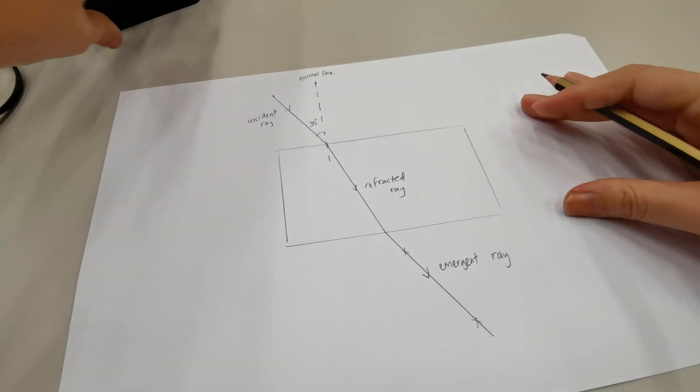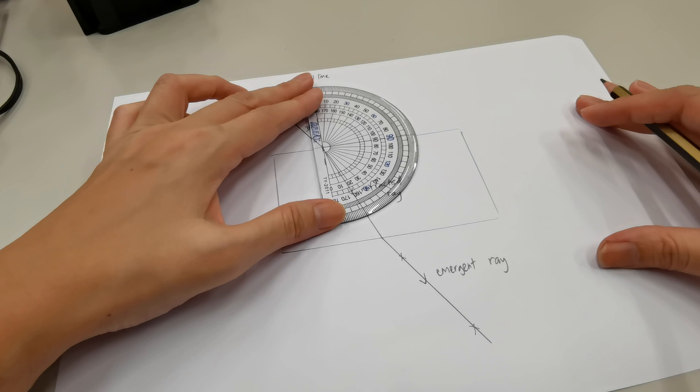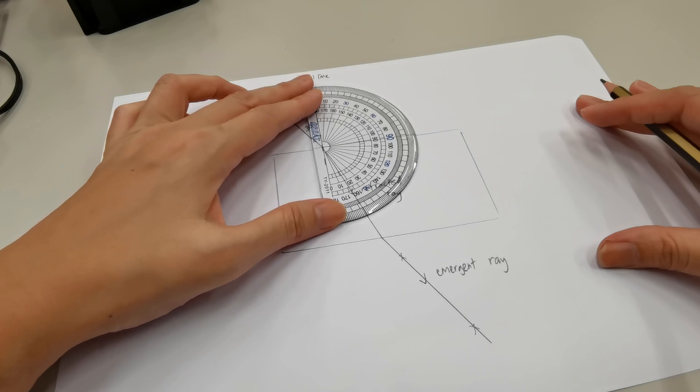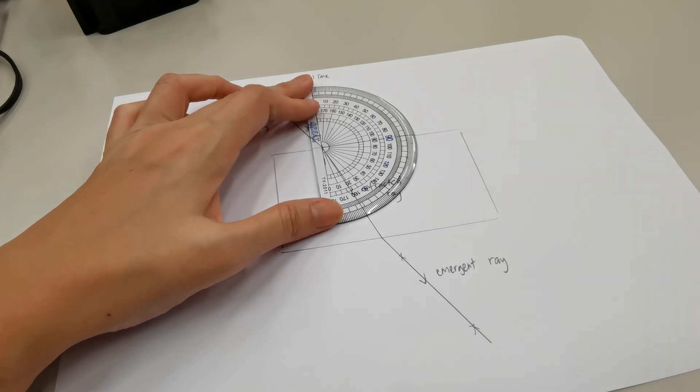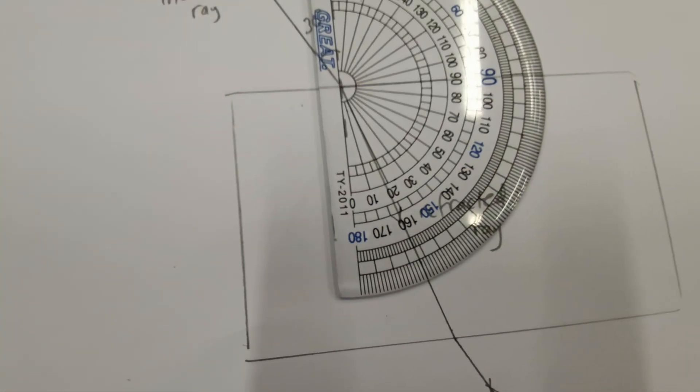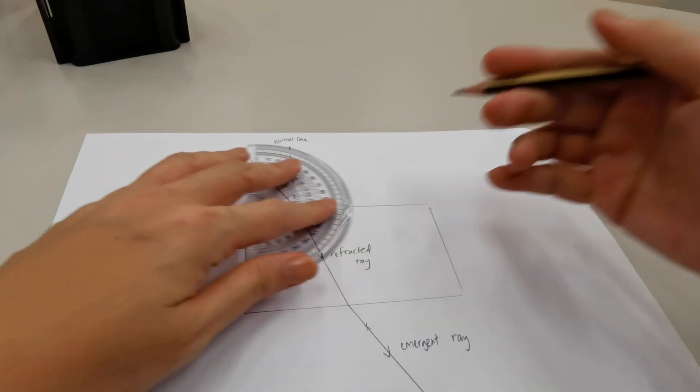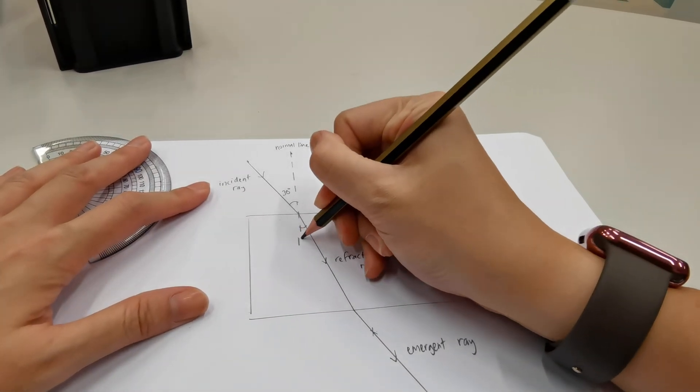In order to measure the refracted angle, we're going to place the protractor over here. And we will measure the refracted angle like this. As you can see, the value is about 18 degrees. So we'll label that. This is 18 degrees.